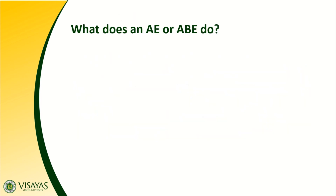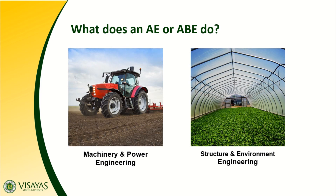So what does an Agricultural and Biosystems Engineer do? There are fields of specialization in this profession. First, we have Machinery and Power Engineering. In this field of specialization, we study the different sources of power and energy for agricultural operations — from human power to animal power, down to mechanical power, including renewable and non-renewable resources.